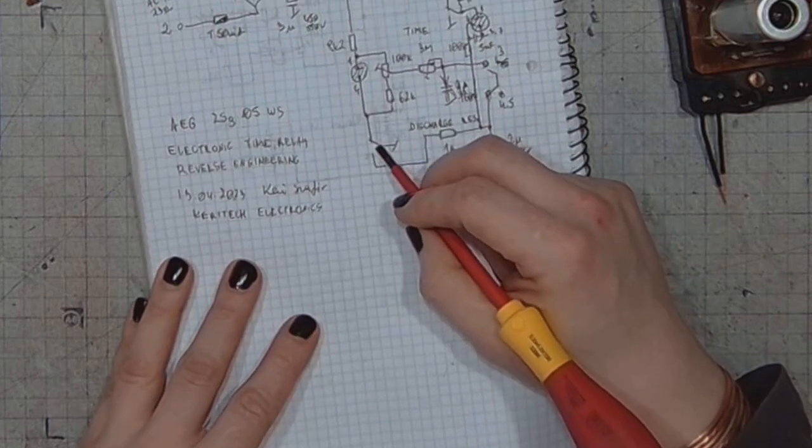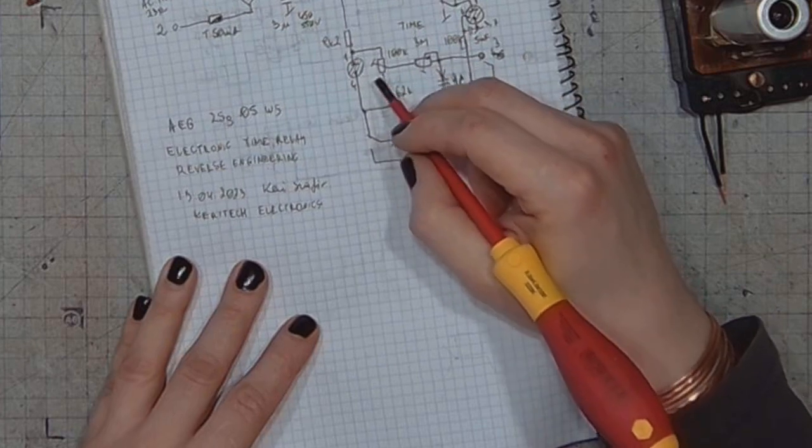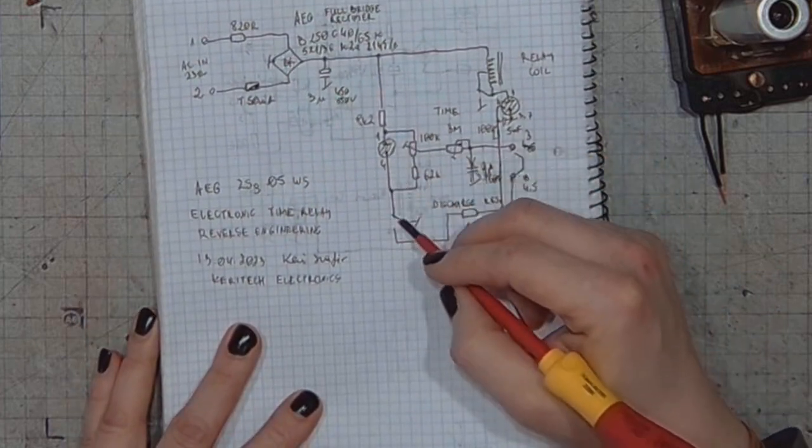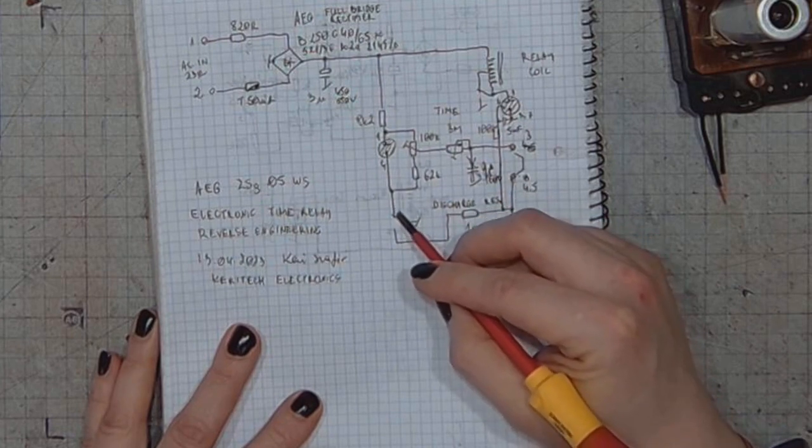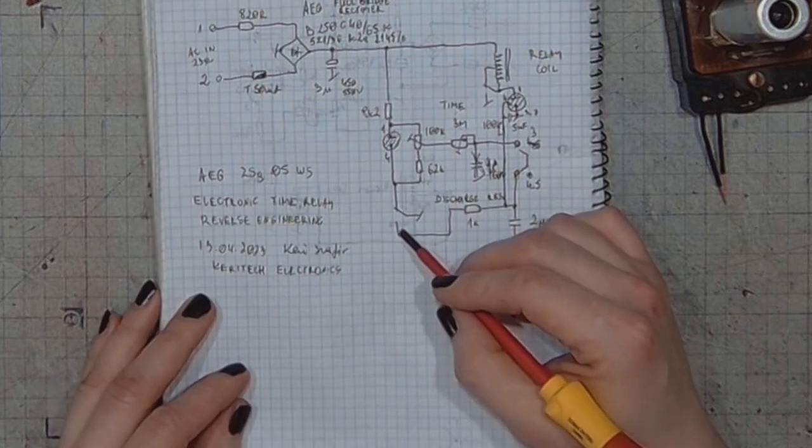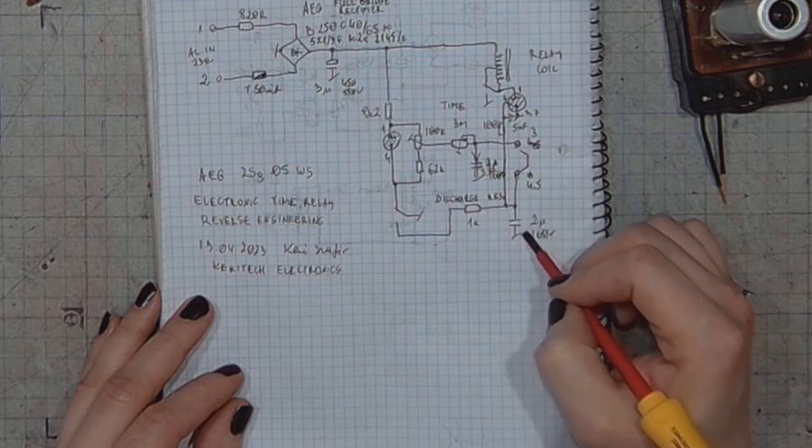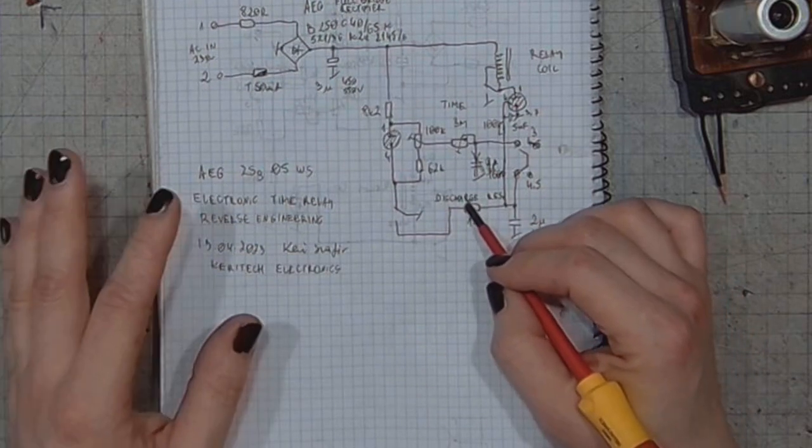This contact will turn off the voltage regulator tube because it will take the ground away from this point. And at the same time, it will discharge the capacitor through a small value resistor that's 1K.